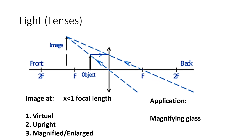Write the three properties. Since the object is less than one focal length away, the image and object are on the same side, so they are virtual and upright. Because the image is bigger, it is magnified and enlarged. The application is the magnifying glass. You need to know the three properties of the image and the application.